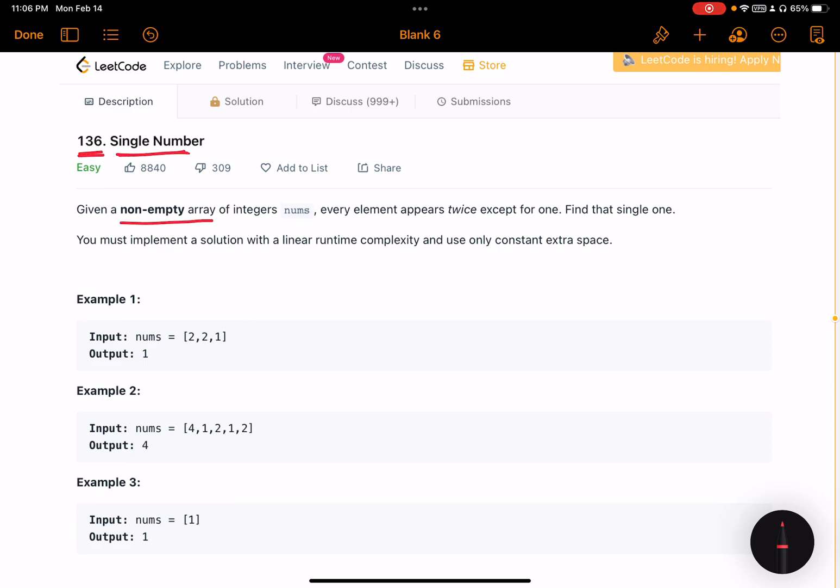The problem statement is: given a non-empty array of integers nums, where every element appears twice except for one, we need to find that single element and return it. We must implement a solution with linear runtime complexity and use only constant extra space.